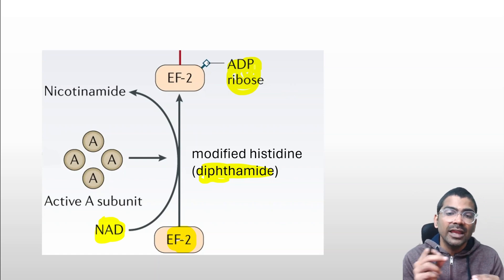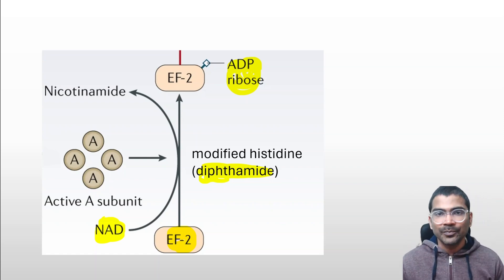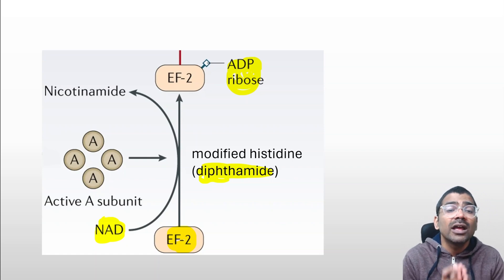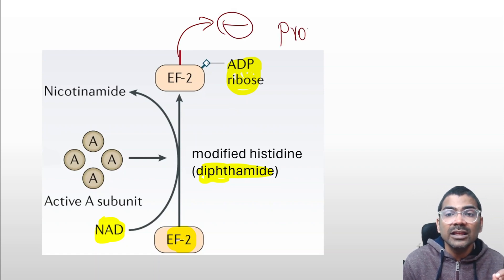It attaches ADP-ribose to the diphthamide of EF2. This ADP-ribosylation inhibits the function of elongation factor 2, and thus protein synthesis is inhibited.